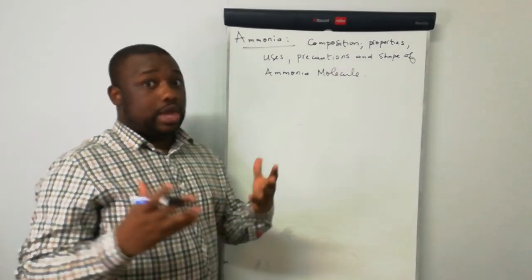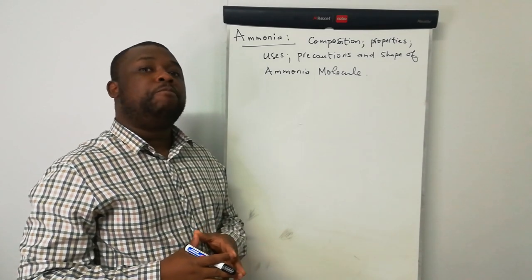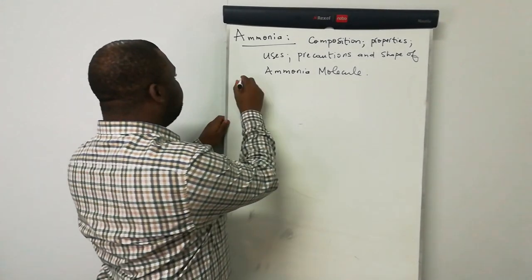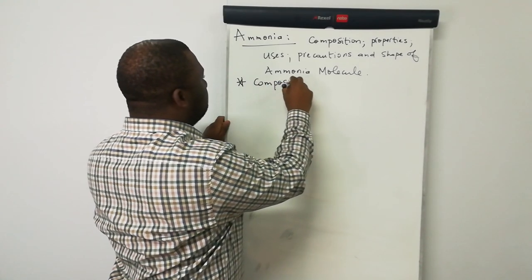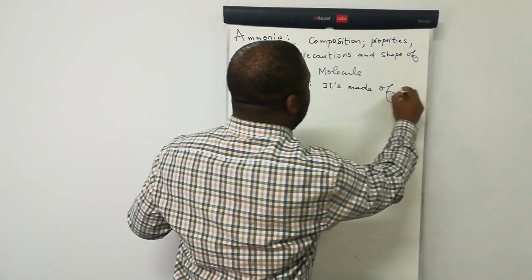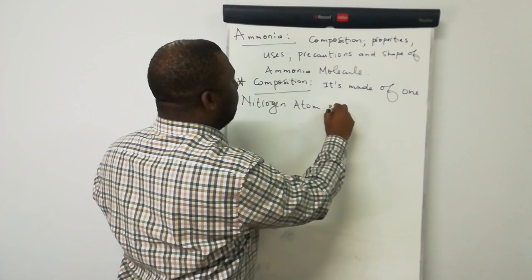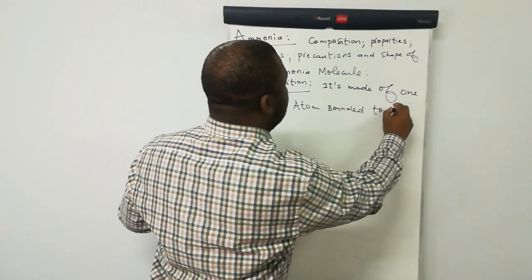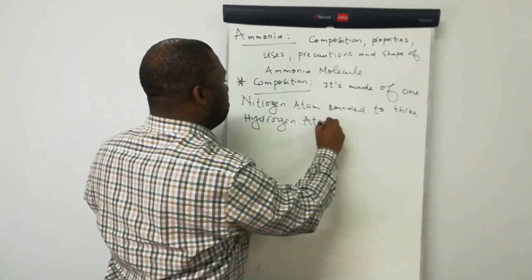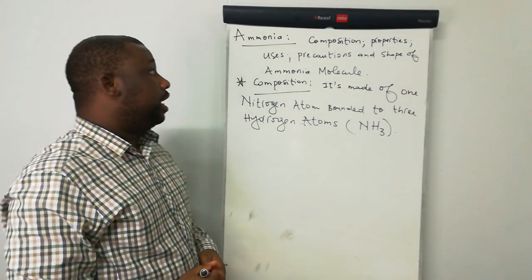Let us start by talking about the composition of ammonia. We're talking about the chemical composition. Ammonia is made of one nitrogen atom bounded to three hydrogen atoms. The chemical formula of ammonia is NH3.